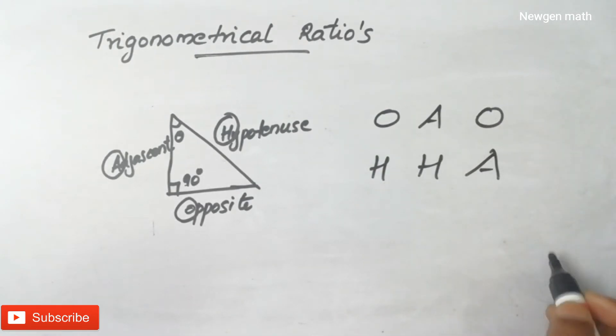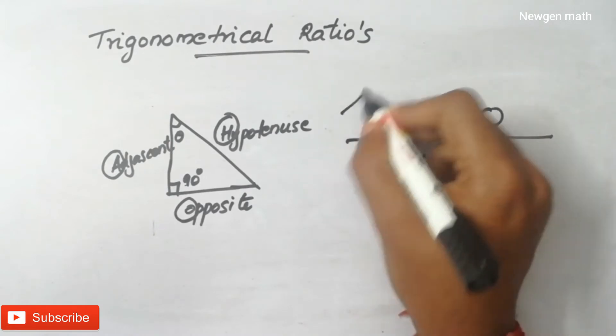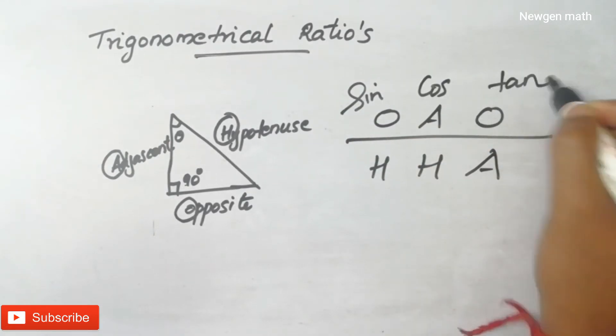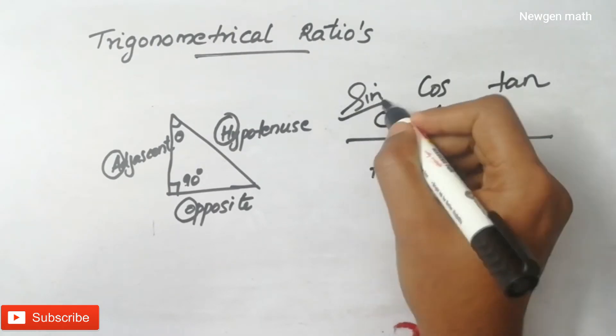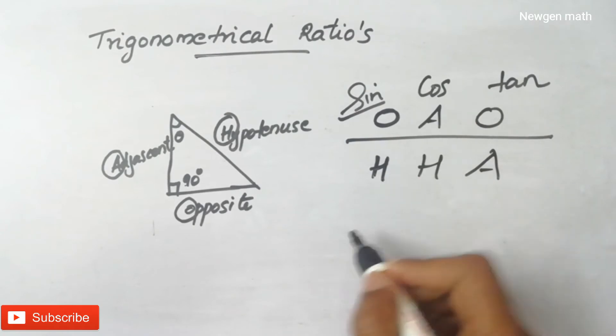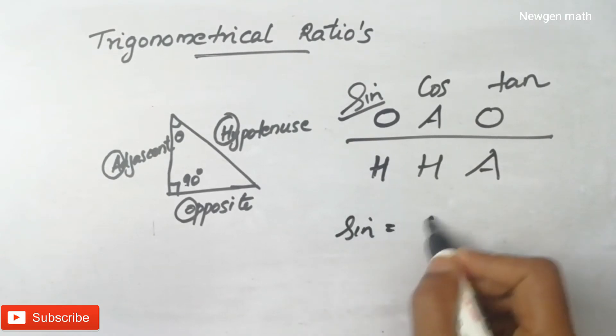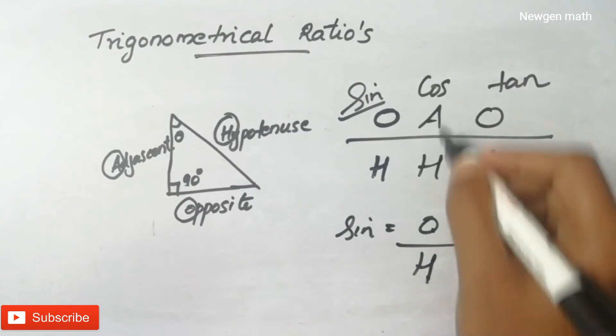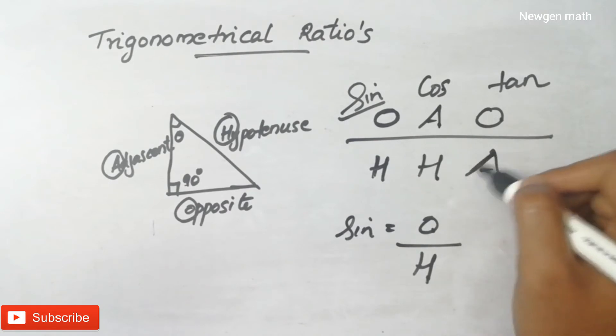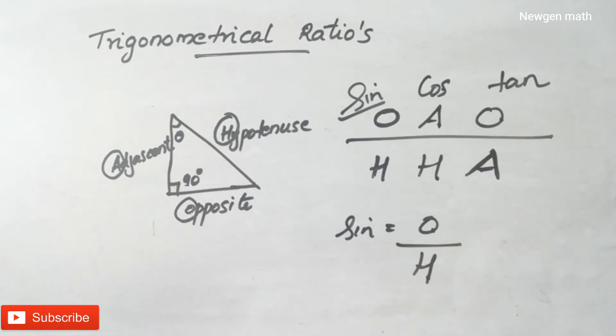It's a simple method. Here is sine, cosine, and tangent. Sine means O over H - opposite side by hypotenuse. Cosine means adjacent side by hypotenuse. Tangent means opposite side by adjacent. We have a simple method.